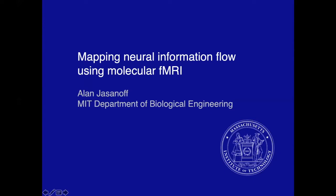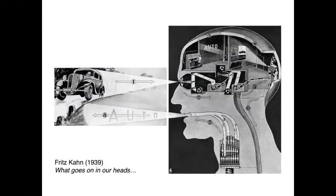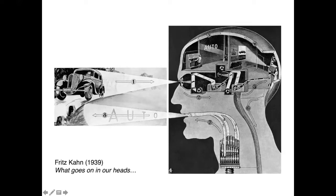My talk is about mapping neural information flow using molecular fMRI. I want to begin with this piece of art from the early 20th century, which diagrams a way of viewing the brain that I think is not as popular today as it once was. These days, we like to think of our brains as the origins of who we are — our tremendous cognitive capabilities, things that dispose us towards creativity, that give us intelligence, that may also turn us into criminals or people with mental illness. But at the end of the day, the brain is actually not just who we are — it's a complicated device for relating input from our outside world to the output we express through our behavior.